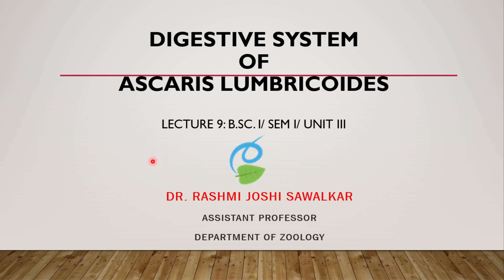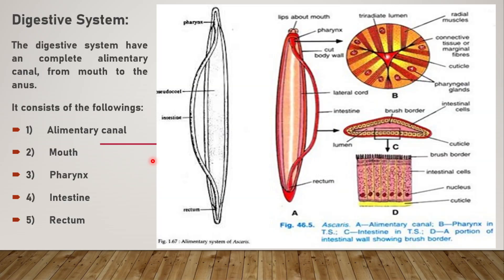Let's see which are the organs of digestion in Ascaris lumbricoides. The digestive system has a complete alimentary canal from mouth to anus. In the previous phylum we studied that there is no complete digestive system seen in Fasciola hepatica because it is a parasite, so a complete digestive system is not required. But in phylum Ascaris, the digestive system has a complete alimentary canal from mouth to anus, consisting of mouth, pharynx, intestine, and rectum.